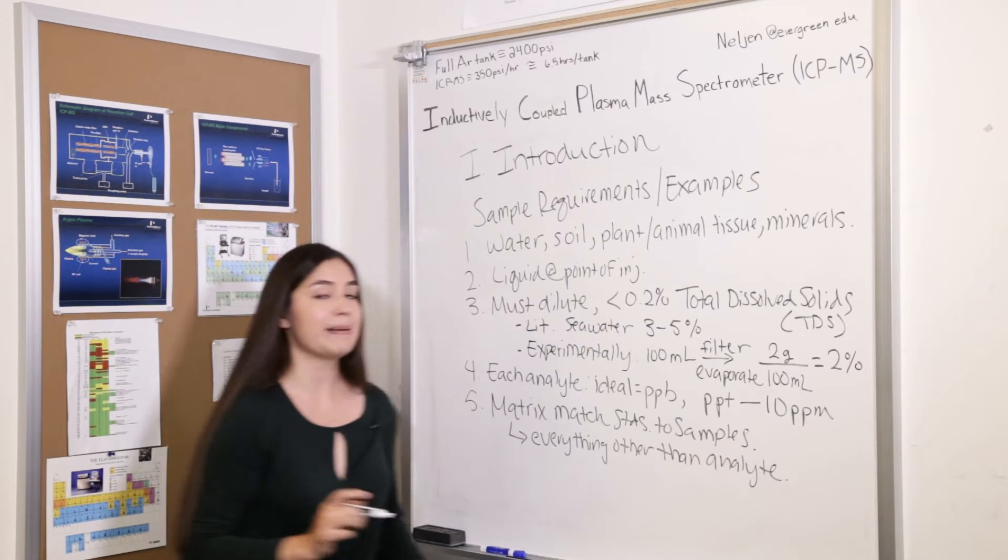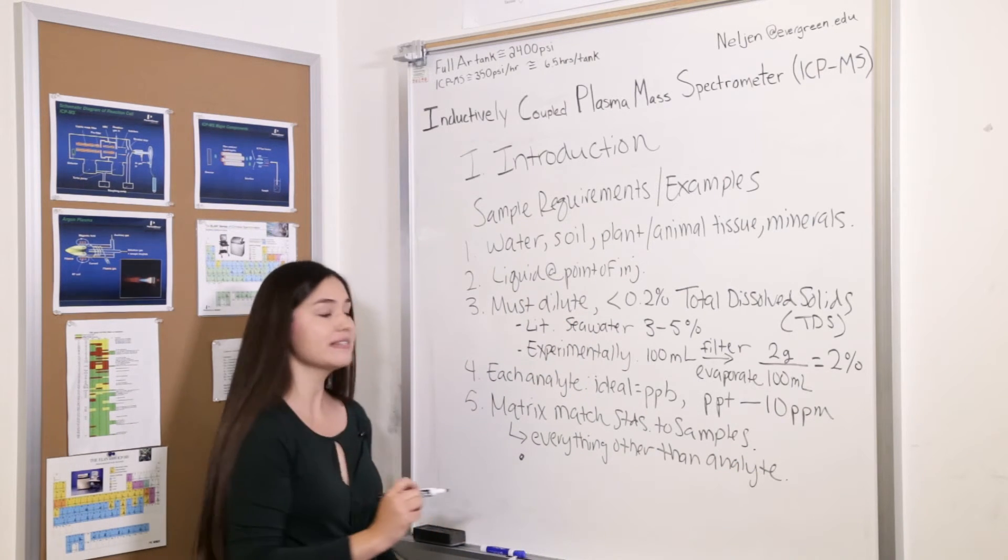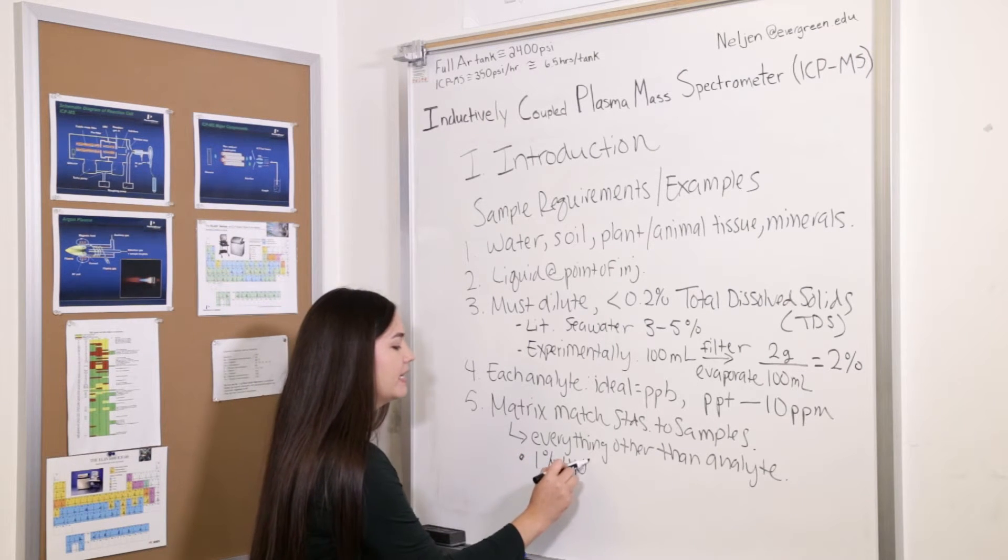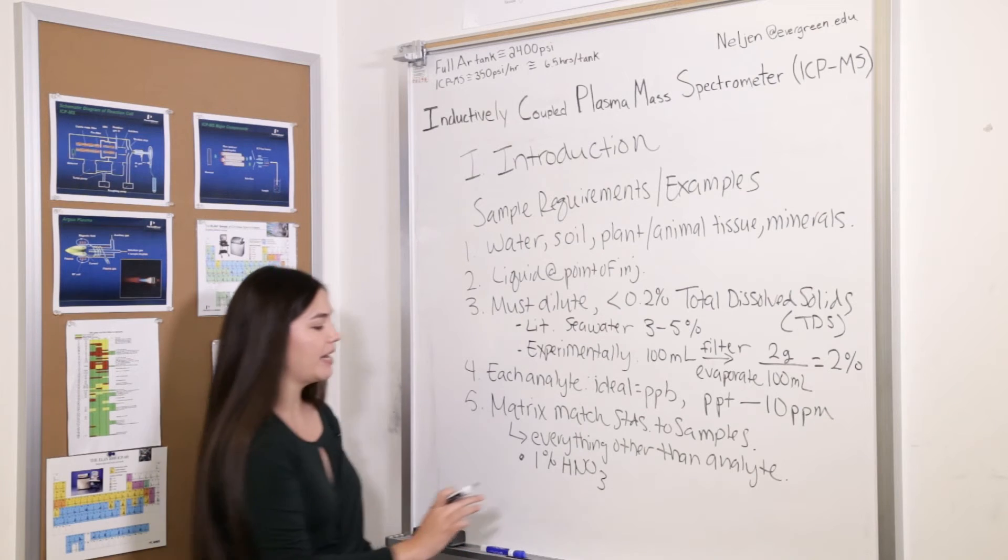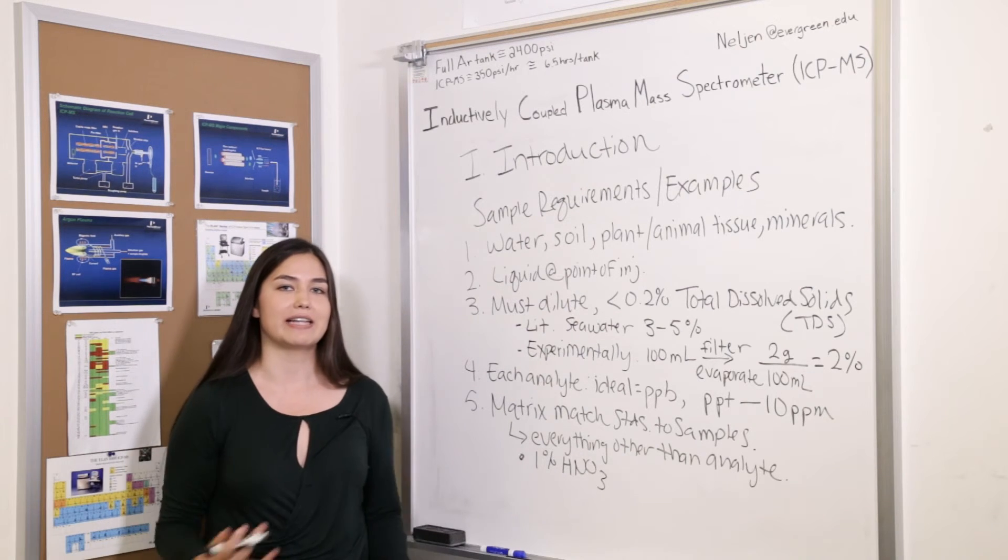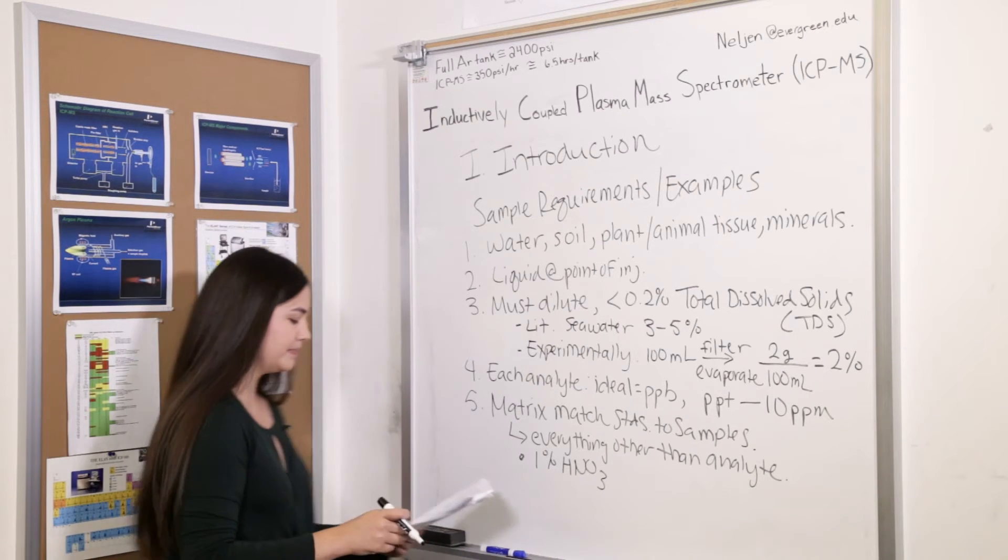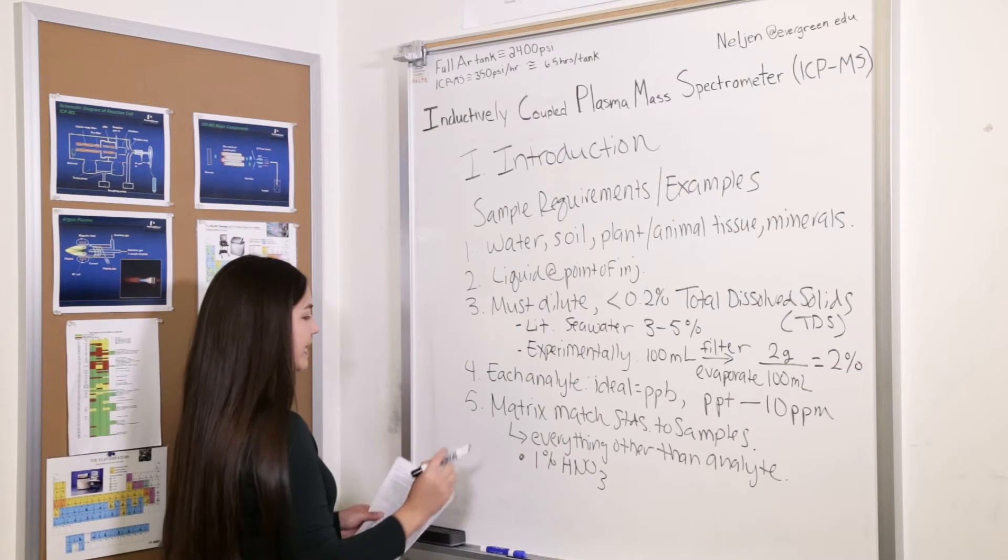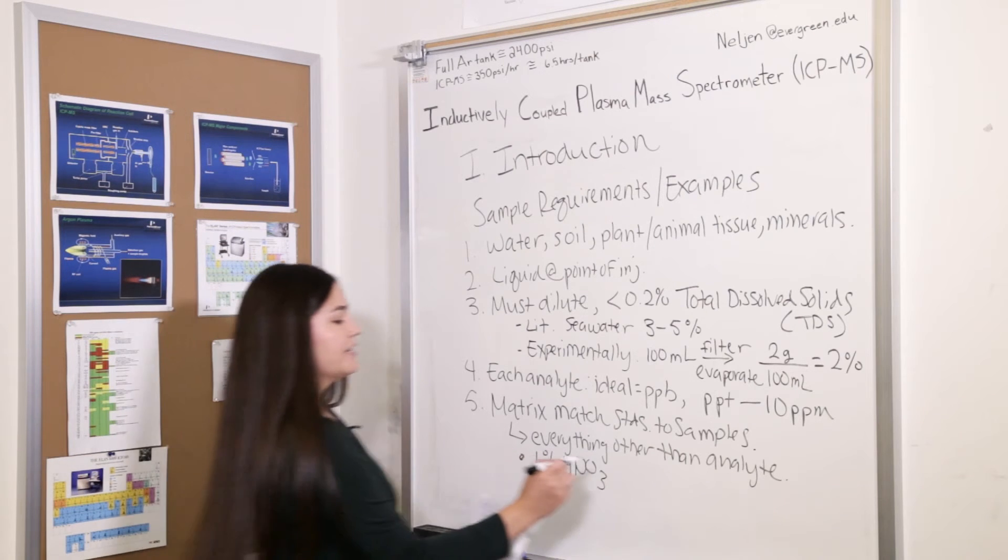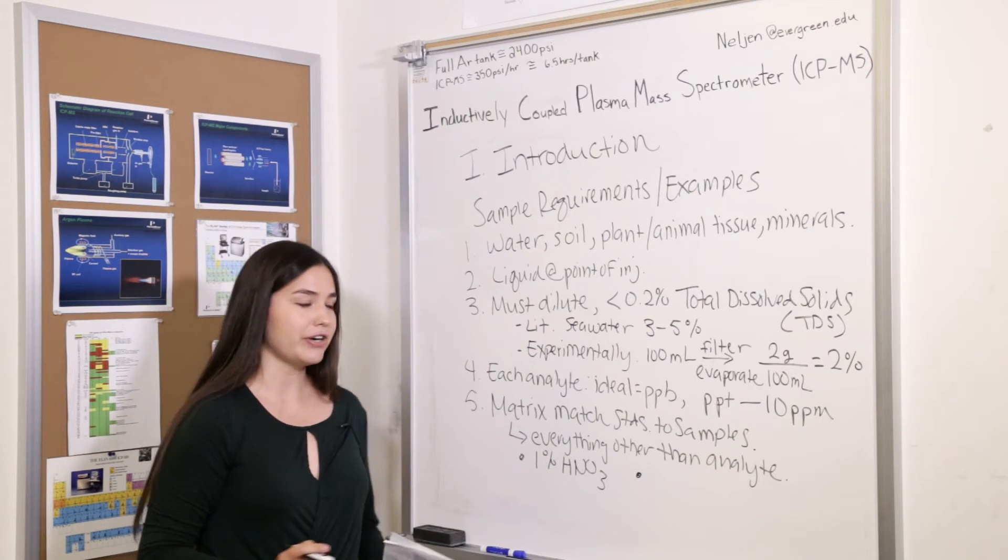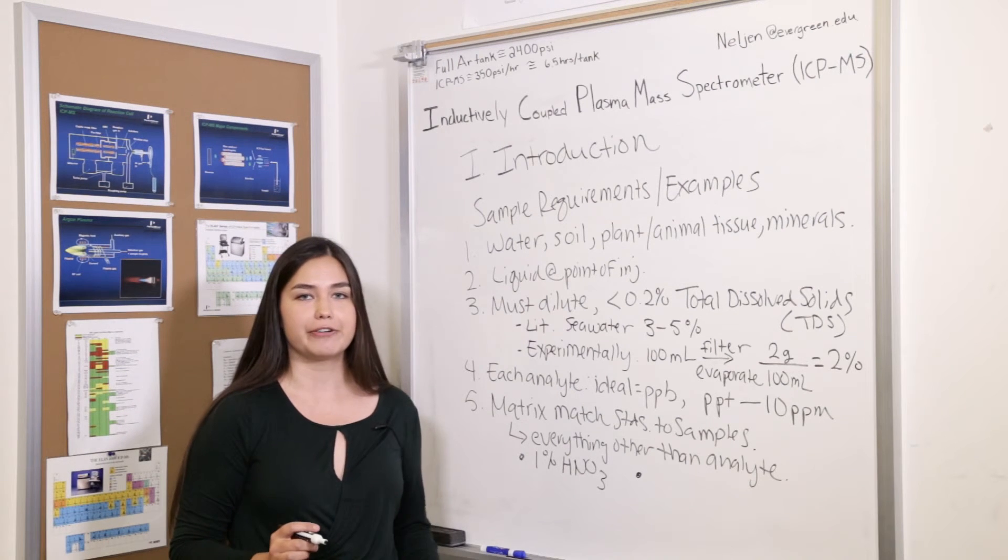As a minimum, all of our samples must have at least a matrix of 1% nitric acid. We add this because it's very important to keep all of our analytes in solution. The reason why we want a matrix match is because it helps us correct for any inconsistencies in sample introduction and helps to correct for interferences.